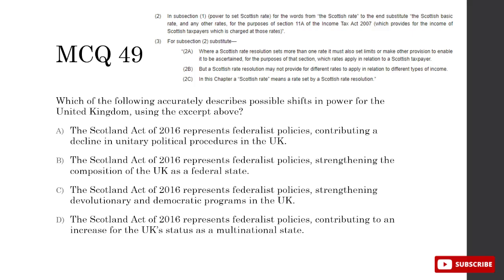Which accurately describes possible shifts in power for the UK using the excerpt? Since power is moving away from being centralized in the federal government, this is a more federalistic policy — but it doesn't make the UK a federal state. A — contributes to a decline in unitary procedures: since it's a more federalist policy, it's less unitary — correct. B — transitions the UK into a federal state: not correct. C — strengthens devolutionary and democratic programs: devolutionary is true, but it doesn't strengthen democratic programs specifically. D — increases UK status as a multinational state: it's not increasing the number of nations. So A is correct.